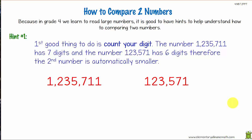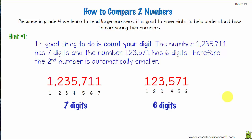Now, how to compare two numbers. In Grade 4 we learn to read large numbers, so it's good to have hints. Hint number one: the first thing to do is count your digits. The first number has seven digits — what does the second number have? Six digits. So we can automatically see that the second number, one hundred and twenty-three thousand five hundred and seventy-one, is smaller than one million, two hundred and thirty-five thousand, seven hundred and eleven. So we use the greater than symbol.